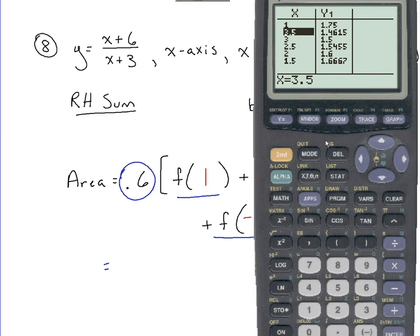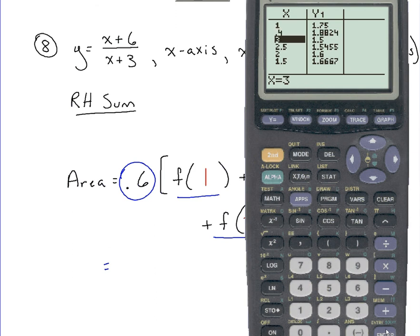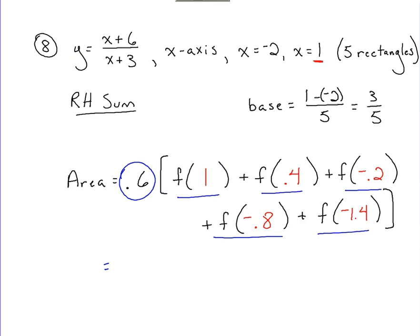I'll continue further here by plugging in for the next value. The next value was 0.4. After that, we had negative 0.2, followed by negative 0.8, and then finally, we had negative 1.4. So all the values that I see right here, these are the values that I want to record. I want to add those up and then multiply by 0.6. Now the resulting answer that I got when I did that calculation, and this is rounding to three decimal places, my approximate area was 6.565.